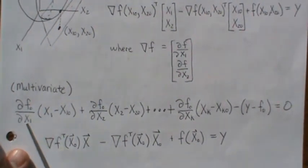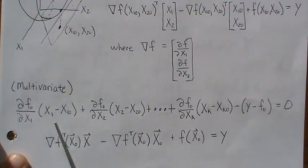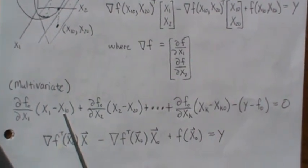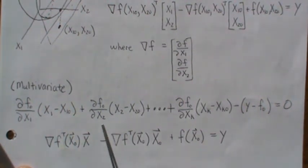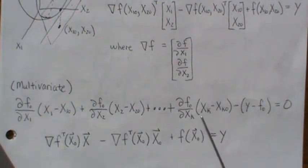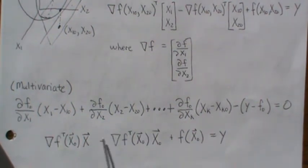To find the tangent plane to a surface, it's this: the partial of our function with respect to x1 times this. Now this is the variable x1, and this is the known x1 component of the known point. And this is evaluated at our known point, that's what that means. And then times this, and that's the known point, that's the variable.